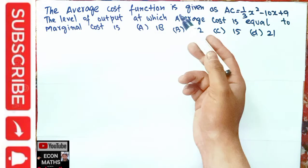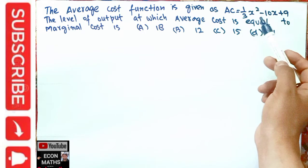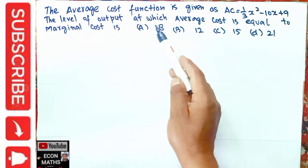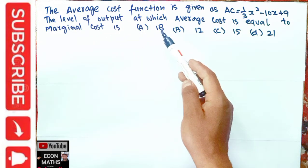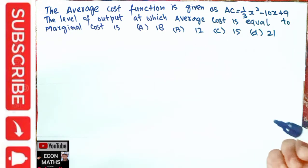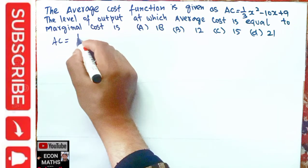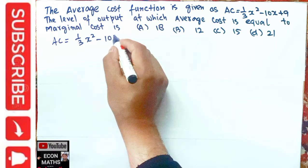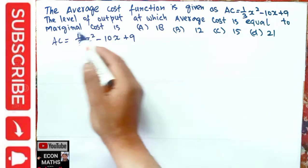The question is: the average cost function is given as AC = (1/3)x² - 10x + 9. The level of output at which average cost is equal to marginal cost is to be found. The options are 18, 12, 15, and 21. We are given the average cost, so we write: average cost = (1/3)x² - 10x + 9.